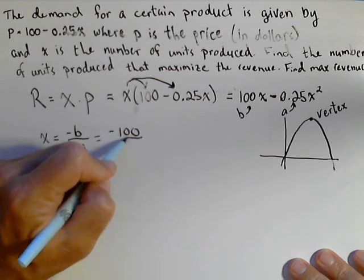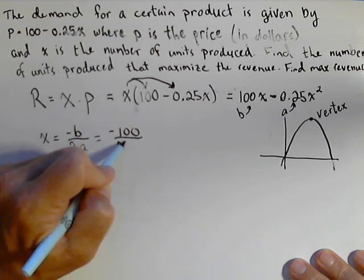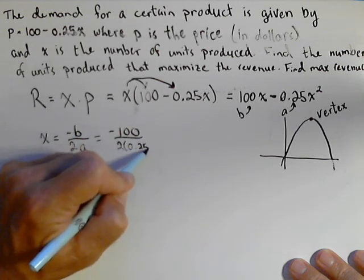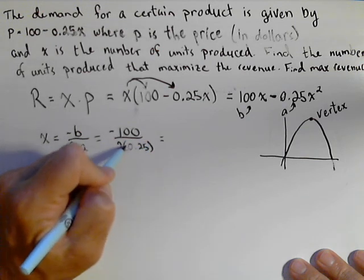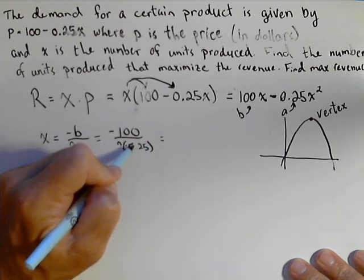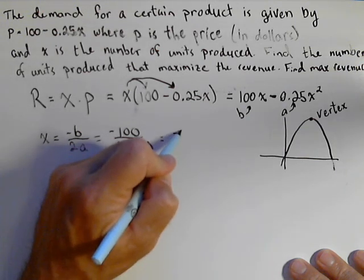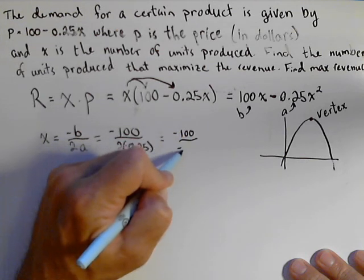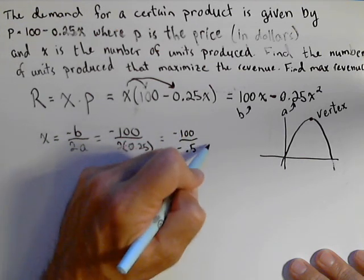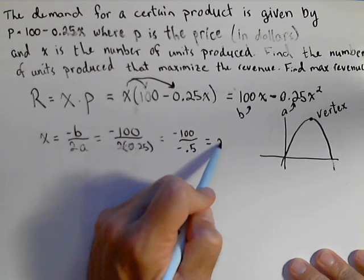So, -100 / (2 × -0.25) gives us -100 / -0.5, which gives us a positive 200.